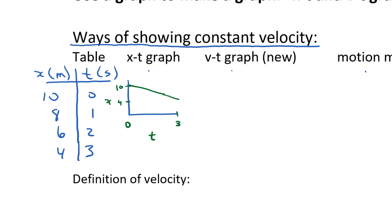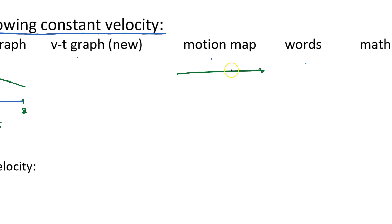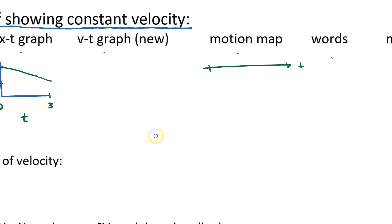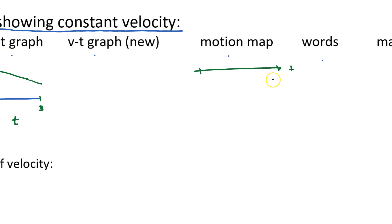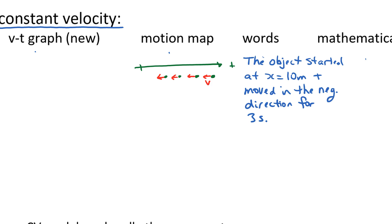I won't do the velocity-time graph yet because I'm just going to be introducing that. What would the motion map look like? On the motion map we like to indicate which direction is positive and where the origin is. In this case it's going to start at position 10. We have four points, and each time I will indicate with a little arrow — trying to make it halfway to the next dot — to show velocity. Those velocities are in the negative direction and they're about the same each time. How could I write this in words? The object started at x equals 10 and then moved in the negative direction for three seconds.